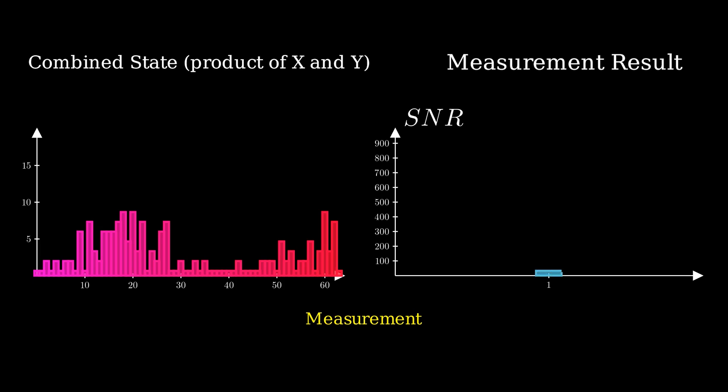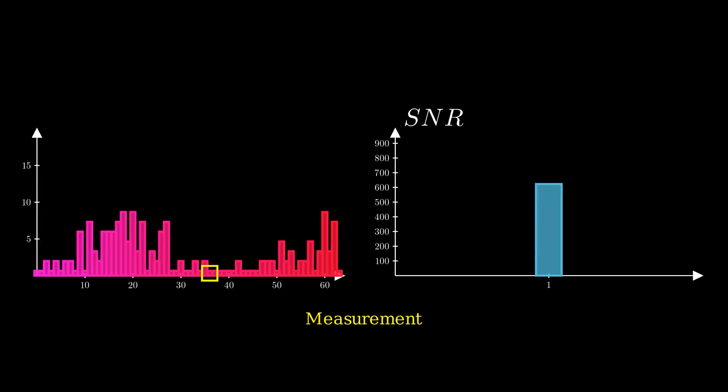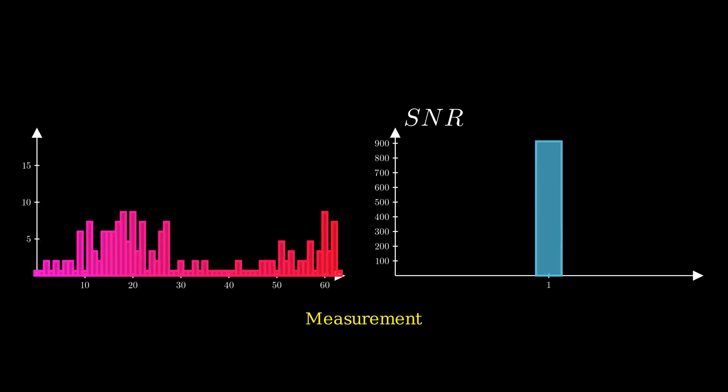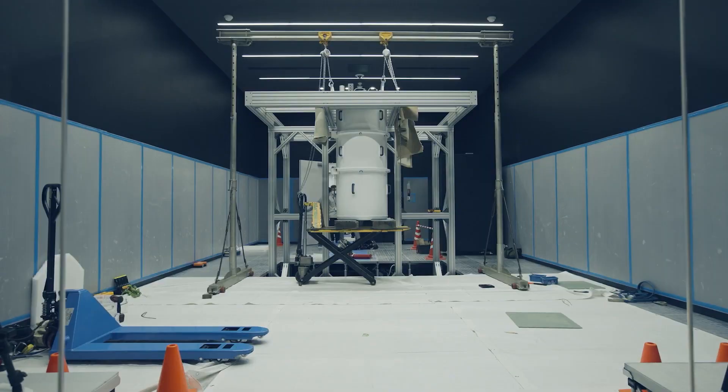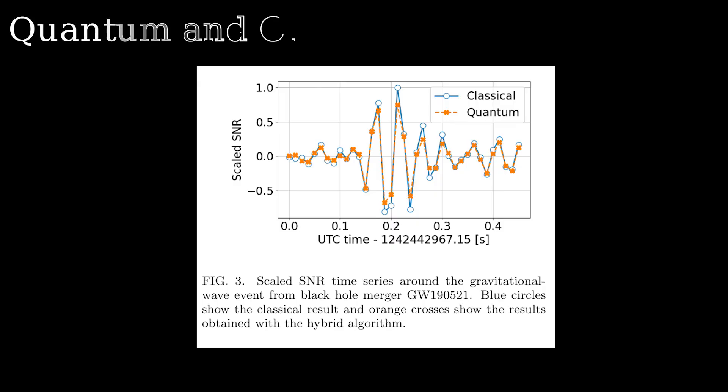Finally, the results of the measurements are aggregated and processed classically to produce a final signal-to-noise ratio. This algorithm was run on actual IBM hardware for this paper, and the classical and quantum versions look very similar. Here are some of the results.